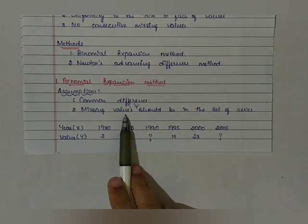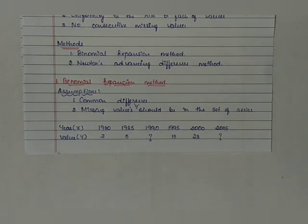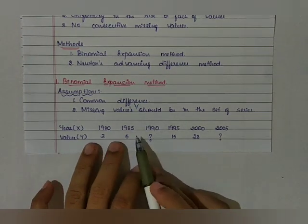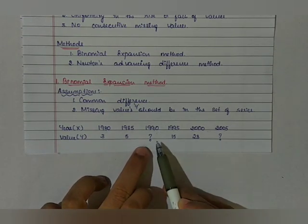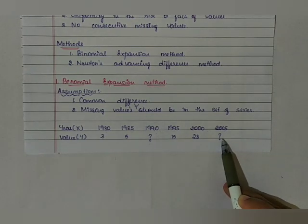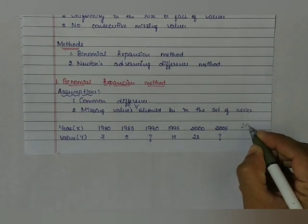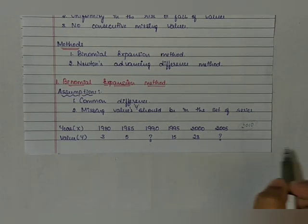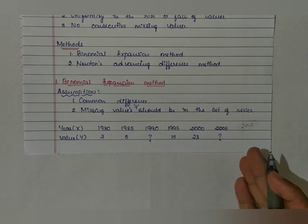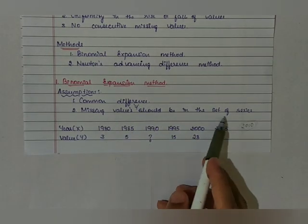The second assumption is that the missing value Y should be there in the set of series. For example, if you are asked to calculate the value for 2010 and it is not in the given set, it is not possible to apply the binomial expansion method. To apply the binomial expansion formula, the missing value must exist within the given series itself.